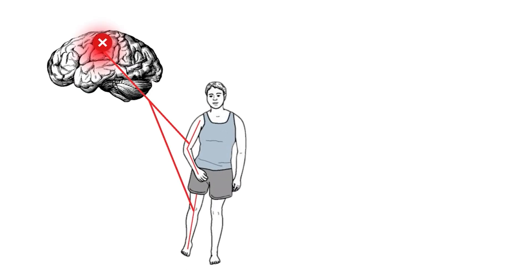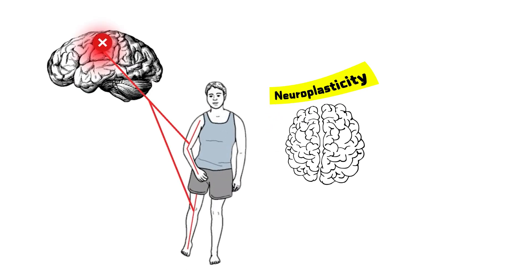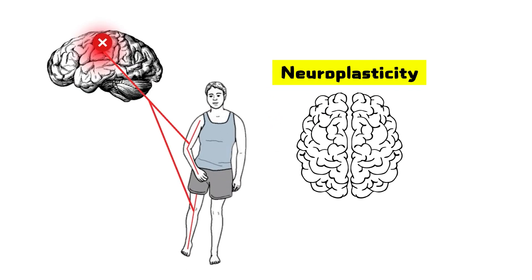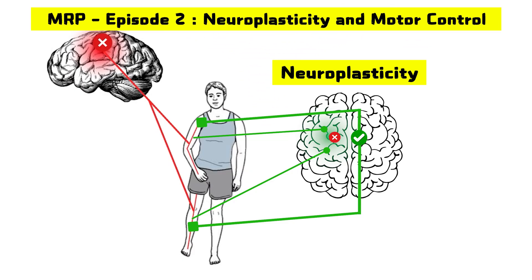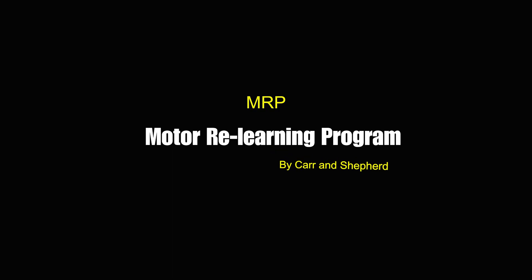How can a stroke survivor learn to walk again, even after part of their brain is damaged? The answer lies in neuroplasticity. When someone has a stroke, the damaged area may lose function, but the surrounding brain areas, or even the opposite hemisphere, can take over. This is what we are going to discuss in this second episode: how neuroplasticity takes place in stroke recovery.